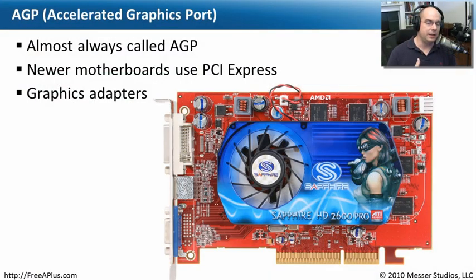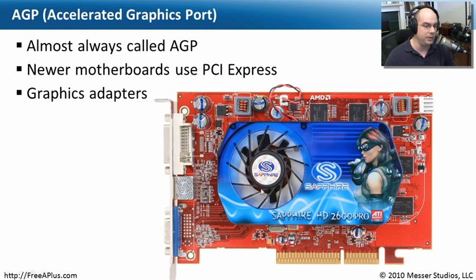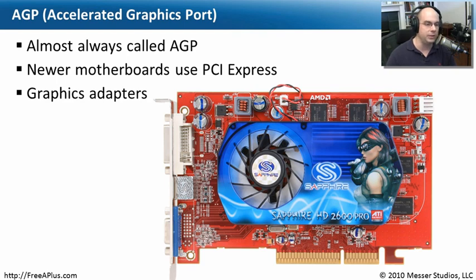When you start talking about installing video cards in a computer, you're talking about a video adapter that's going to need a lot of throughput. Video requires high throughput and high capabilities. Most video cards are very complex — they have their own CPUs and their own fans built right onto them, and they need to transfer a lot of information to and from the bus. We knew early on we just weren't going to be able to use standard PCI cards to do that, so the industry created a new type of video interface called an Accelerated Graphics Port, or AGP.